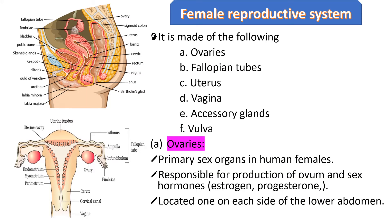The female reproductive system of human beings consists of ovaries, fallopian tubes, uterus, vagina, accessory glands, and vulva. This is the female reproductive system present in females.